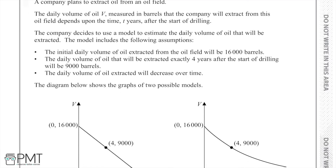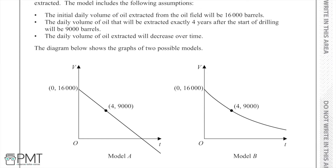The model accounts for the following assumptions: the initial daily volume of oil extracted will be 16,000 barrels, meaning when T equals 0 there will be 16,000 barrels extracted. The daily volume exactly four years after the start of drilling will be 9,000 barrels, and the daily volume will decrease over time — which makes sense because oil is a finite resource. We are shown two models, Model A and Model B, as two possible ways of modelling the situation.